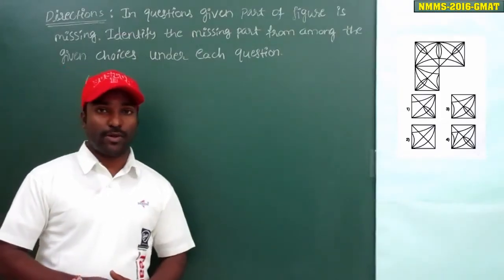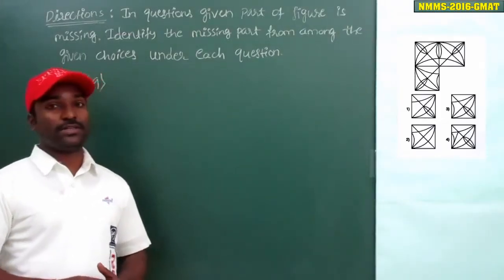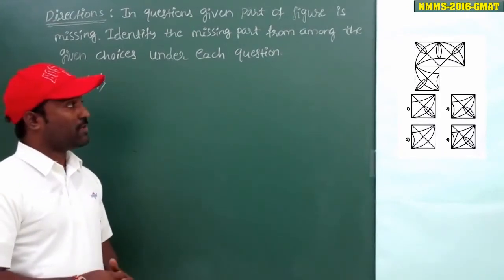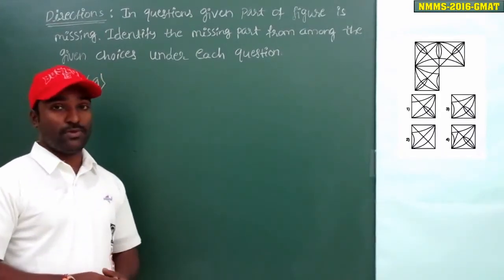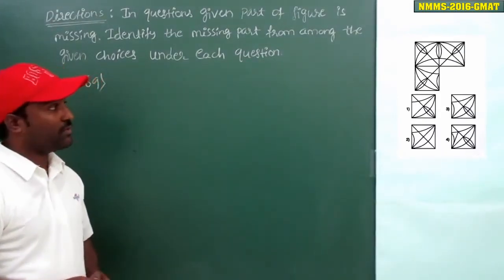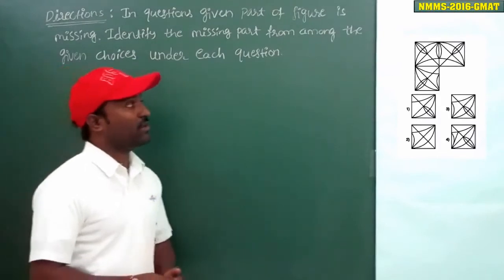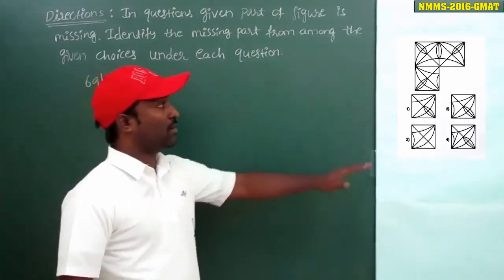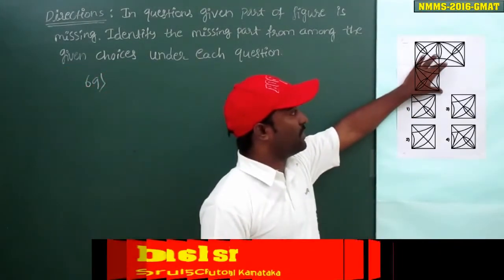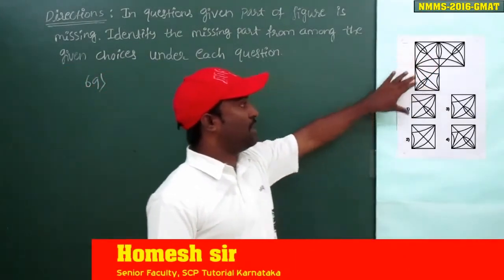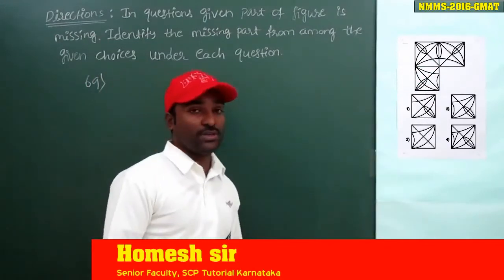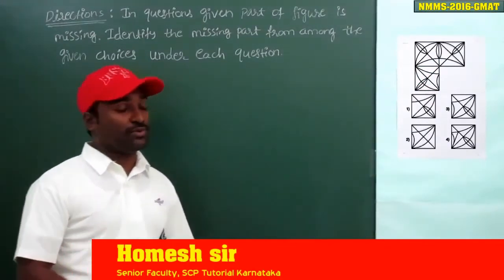Well friends, here is one more problem — problem number 69. This problem is also the same, based on the same direction. We have to complete the missing part of the given figure and just compare that with the given options and select the correct option.